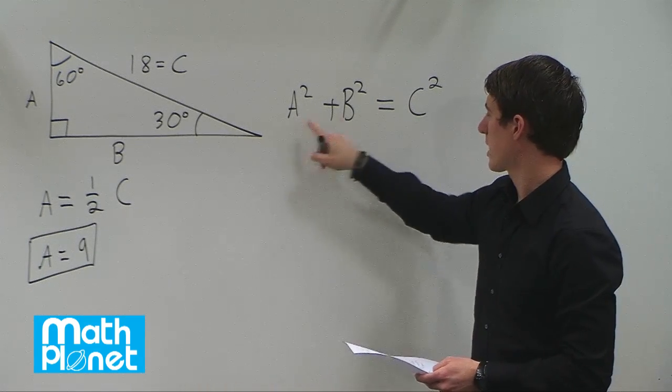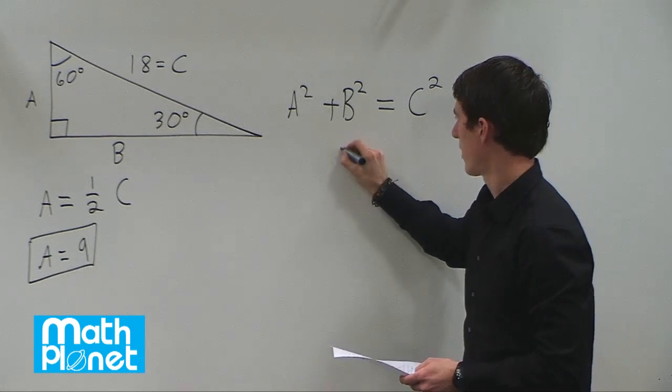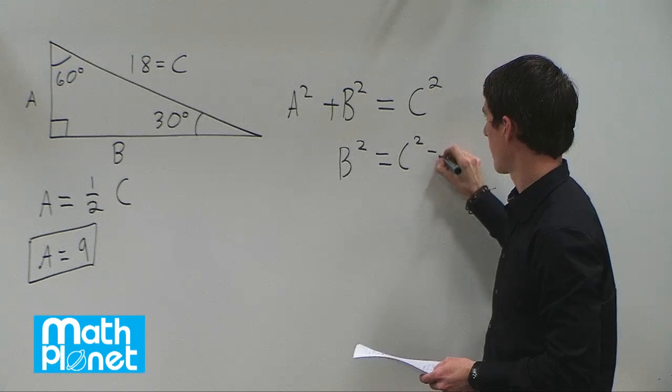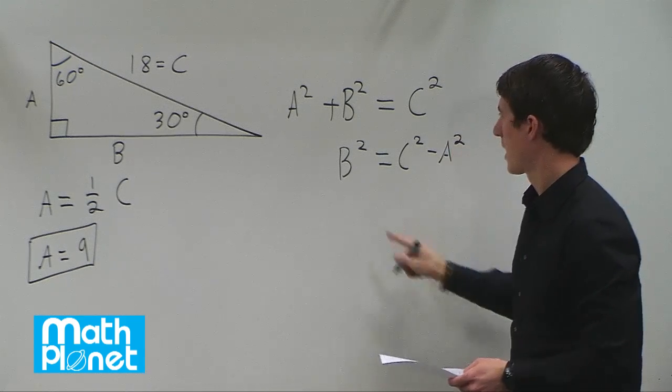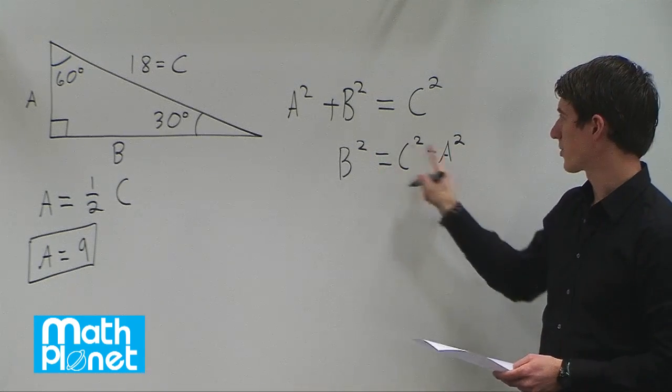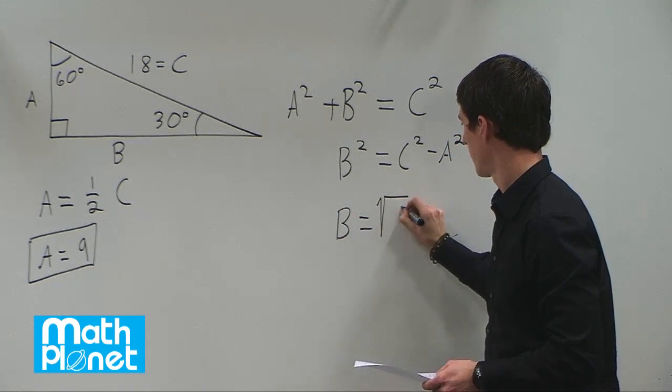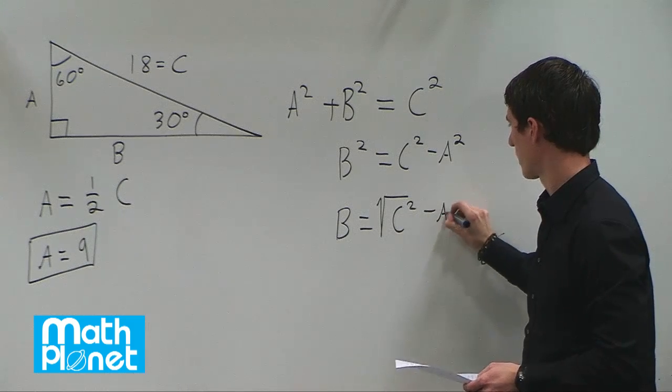So if we subtract A squared from both sides, then we get B squared equals C squared minus A squared. And then we need to find B by taking the square root of both sides. So B is equal to the square root of C squared minus A squared.